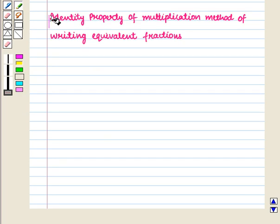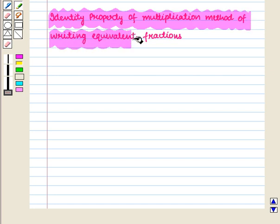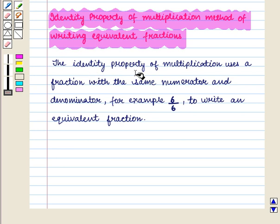Now we shall discuss identity property of multiplication method of writing equivalent fractions. The identity property of multiplication uses a fraction with the same numerator and denominator, for example, 6 by 6, to write an equivalent fraction.